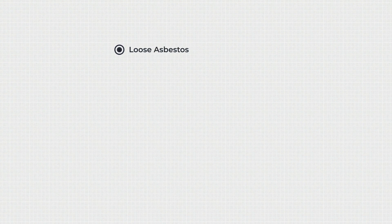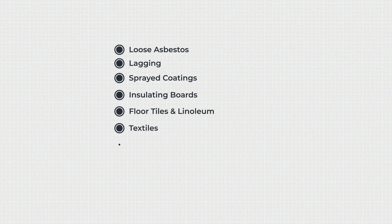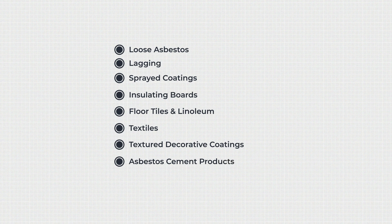Loose asbestos in cavities where it has been used as insulation; lagging around pipes and boilers; sprayed coatings, sometimes known as limpet asbestos; insulating boards used in partition walls and ceiling tiles; floor tiles and linoleum; textiles; textured decorative coatings such as Artex and some types of paint; asbestos cement products such as pipes, building sheets and roofing; and other building materials such as ropes, paper, felts, coated metal, sealants, bonding agents and reinforced plastics.